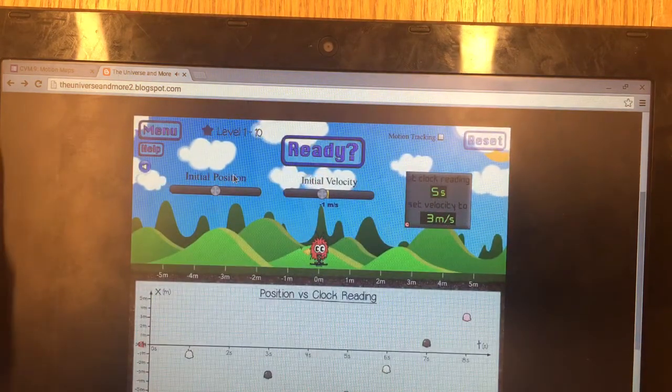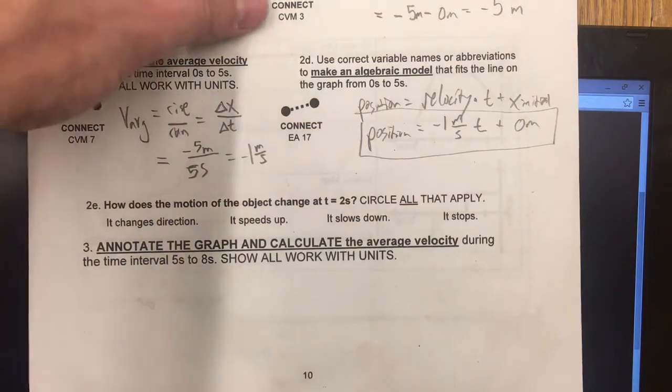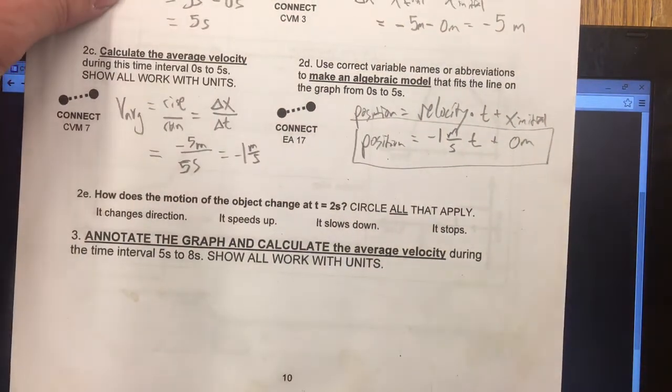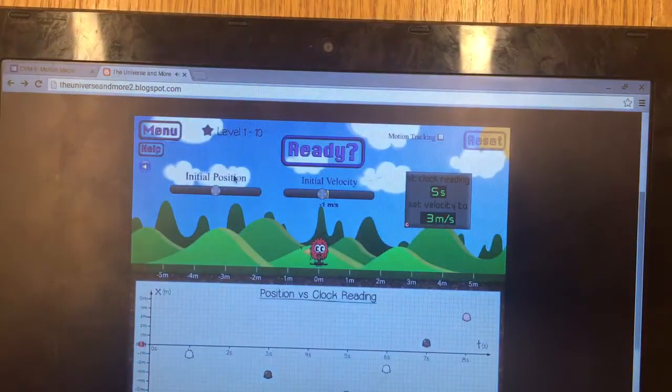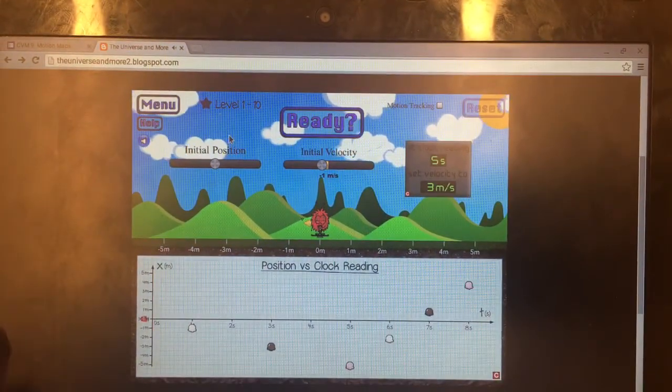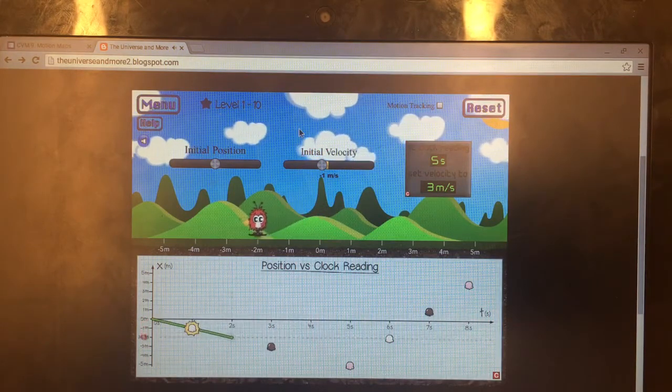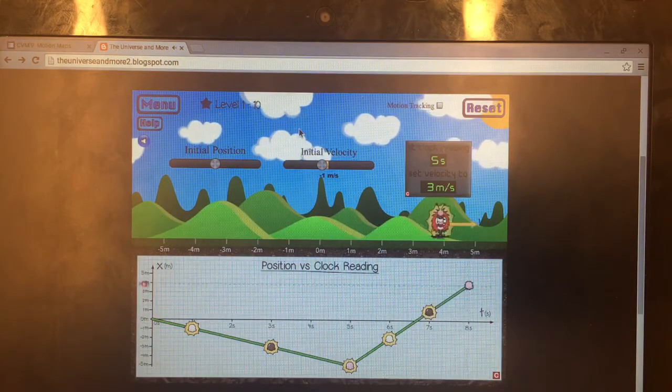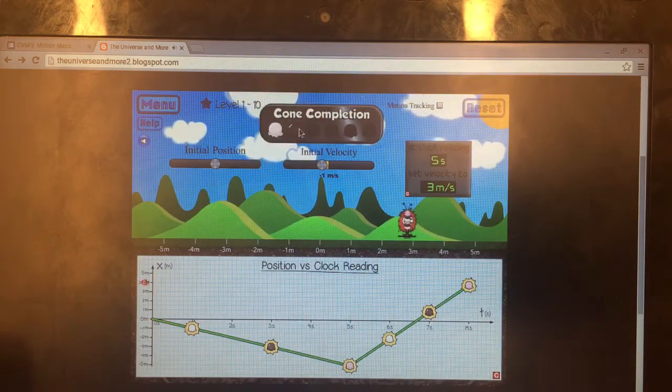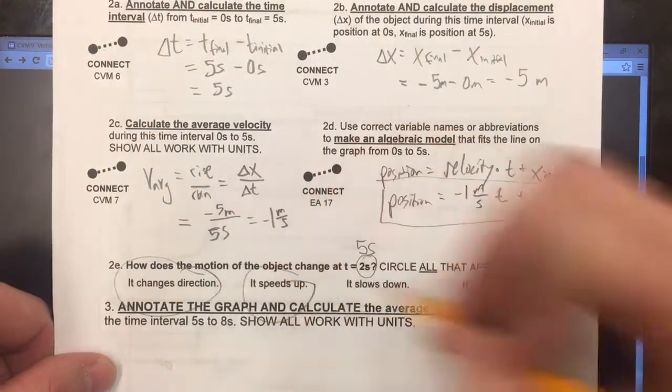Now we want to answer this question right here: how does the motion of the object, that is the little fuzzy guy, change at—oops, I'm sorry, this should say t equals five seconds. So watch him carefully as he's picking these ice cream cones. We need to figure out which of those answers are correct. So he starts out by moving to the left, catching all these ice cream cones, and then he increases speed and changes direction. So on a question like this, we would want to say he changes direction and speeds up.